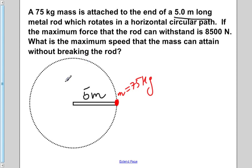Now, since we're rotating in this circular path, we know that we're going to have a centripetal acceleration. With that being known, we know that if we do Newton's Second Law, net force is equal to mA centripetal, we would find that the net force that the rod can withstand is a total of 8500 newtons.